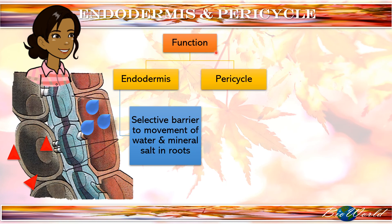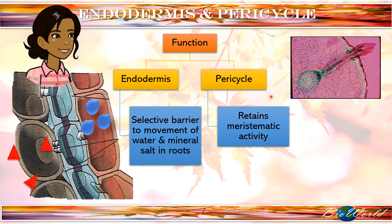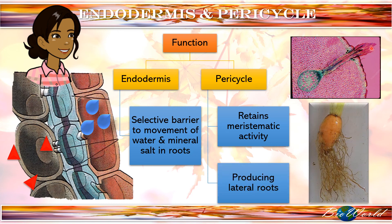Meanwhile, the pericycle which is found in the root maintains its meristematic activity. In this microscope image, you can see this green layer here is the pericycle layer, which has continued to carry out mitosis, so the cells of the pericycle have extended to form outside the root. This new extension is the lateral root. So you can see in this picture, these small tiny root hairs are actually lateral roots.